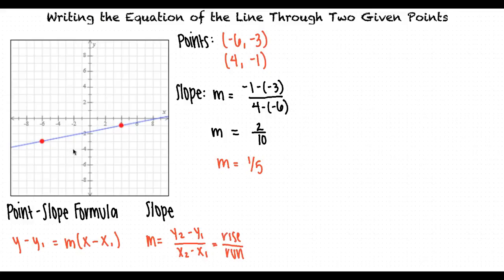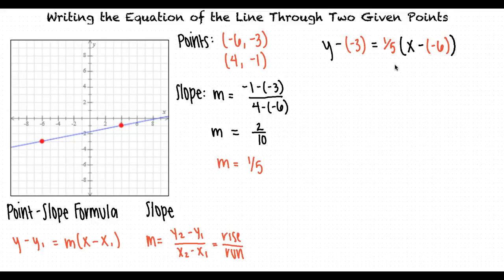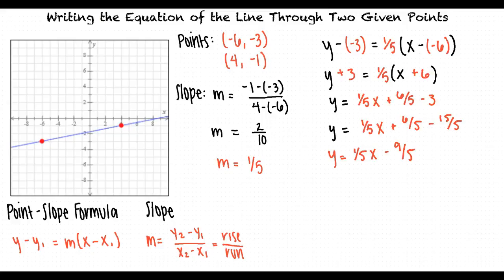To find the equation of this line, we'll use m equals 1 fifth and x1 comma y1 equals negative 6 comma negative 3 in our point-slope formula. This gives us y minus negative 3 equals 1 fifth times the quantity x minus negative 6. When we simplify and get y by itself on the left side of the equation, we get that y equals 1 fifth x minus 9 fifths.